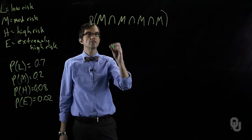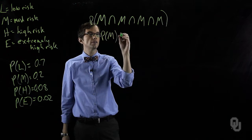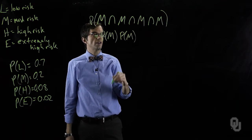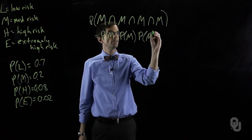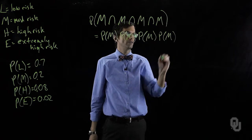Therefore we can rewrite this as the probability of a medium risk project in the first one, same in the second, same in the third, and same in the fourth.